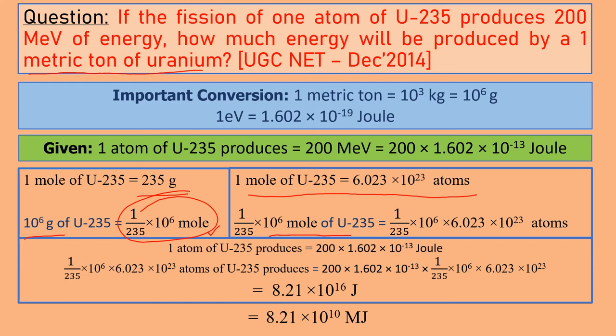This will be 1 upon 235, 10^6 into 6.023 × 10^23. How much does one atom of uranium produce? 200 × 1.602 × 10^-13. When we solve this, we get 8.21 × 10^16 joules.